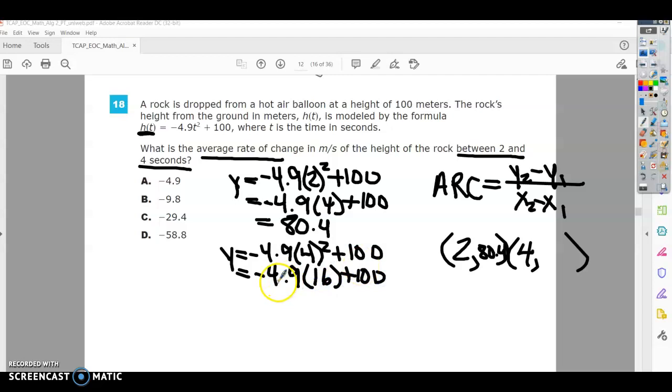And I'm going to take negative 4.9 times 16 plus 100. And I get 21.6. So the number that goes with my 4 is 21.6.